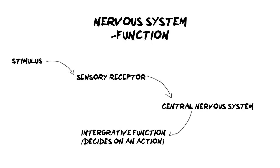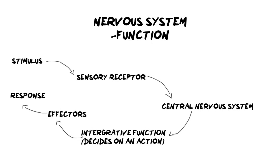Are we going to blink? Are we going to run away? Once we've made that decision, we need to send it to somebody who is going to carry out the response. We call these structures effectors — they are generally muscles or glands, and they respond to the instruction and create some kind of response. Responses can be things like increasing or decreasing the rate of digestion, or increasing your heart rate. In that example, the effector would be the heart and increasing the heart rate would be the response.